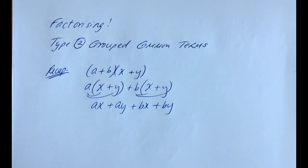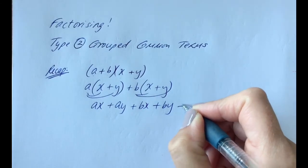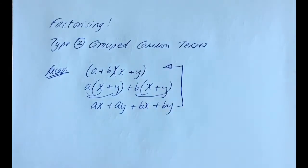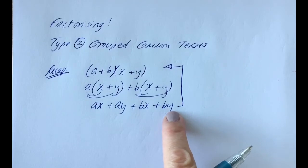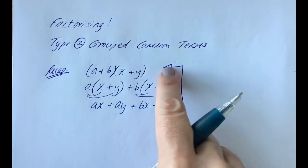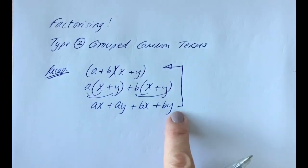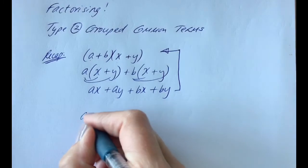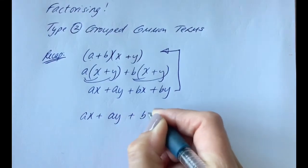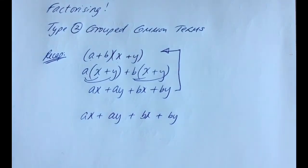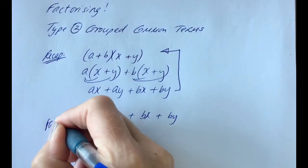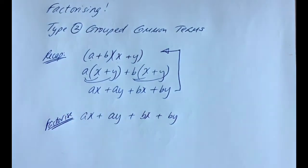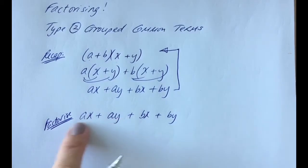And that would be your answer. Now when we're factorising, what we are looking to do is to go from this result back to the brackets — from the multiplied-out version, working backwards to see what two things were multiplied to get this result. So taking this very example, if we had ax plus ay plus bx plus by and we were asked to factorise it, we would look at the first two terms and see what's common.